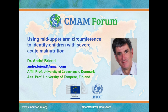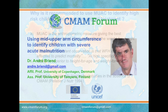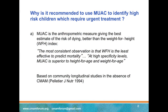During this talk, we will examine why it is advised to use mid-upper arm circumference to identify children with severe acute malnutrition. The first reason why it is recommended to use mid-upper arm circumference, or MUAC, to identify higher risk children is that MUAC is the anthropometric measure giving the best estimate of the risk of dying — better than the weight-for-height index.